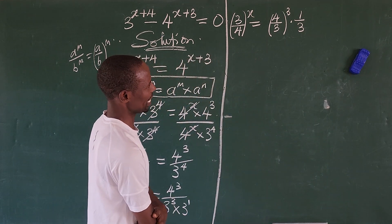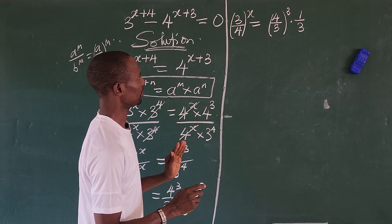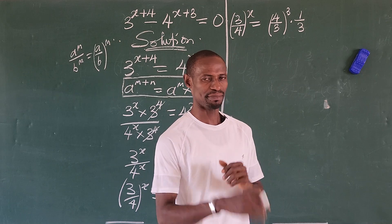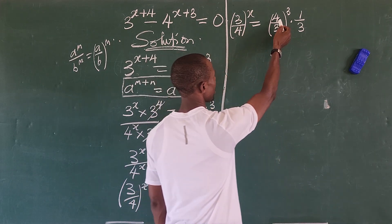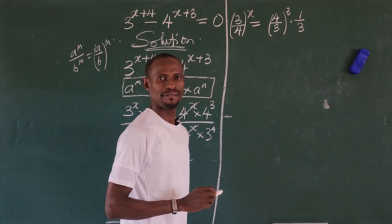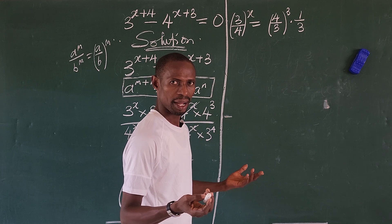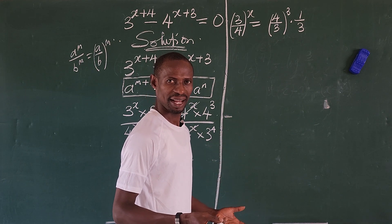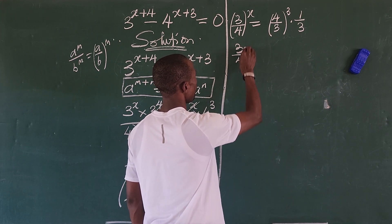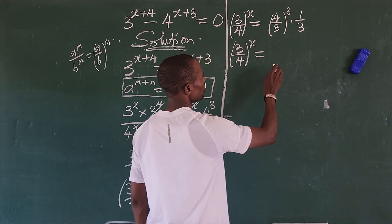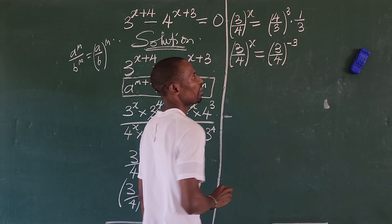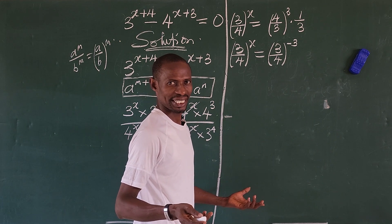Now it is very easy to work with. We have 3/4 on the left and 4/3 on the right. We want to make the right-hand side also have base 3/4. So this gives us 3/4 raised to the power of x, equal to 3/4 raised to the power of minus 3, with a minus sign coming into the system.